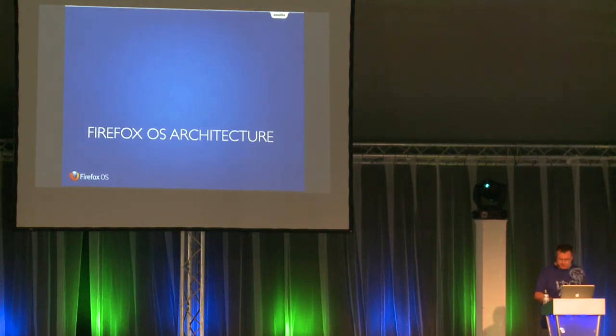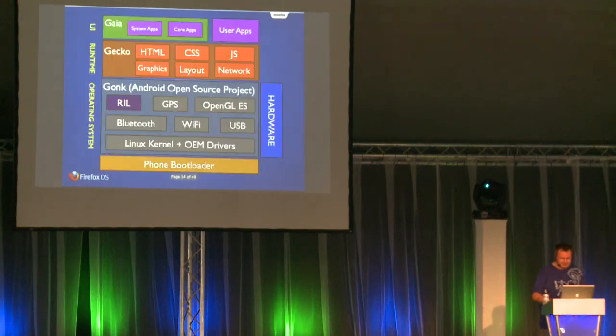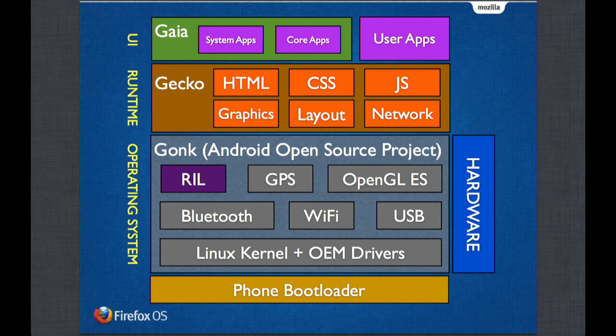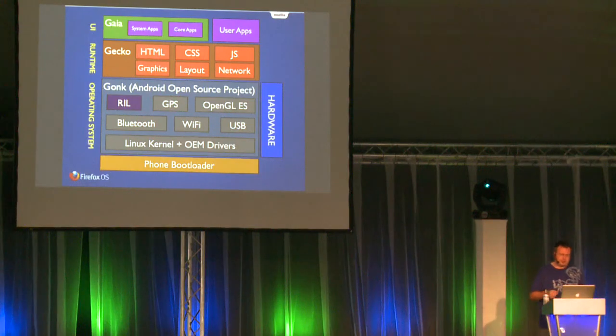I want to talk a bit about Firefox OS architecture. This is a bit more technical, but it will still be fun. There are basically three layers: there's the operating system layer called Gonk, on top of that is a web runtime called Gecko, and on top of that we run a UI called Gaia. Gaia contains everything you see on the screen of the phone — the lock screen, the home screen, and the built-in applications. Let me walk through this and slowly build it up to explain how it all fits together.